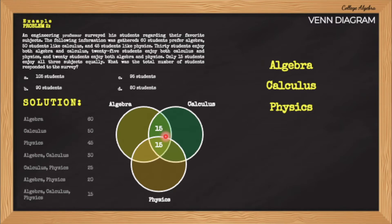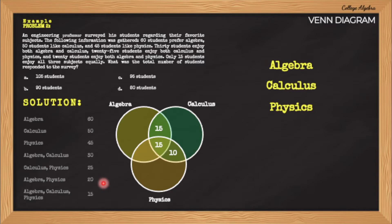Next is the intersection between calculus and physics. According to the problem, there are 25 students who enjoy these subjects. So if there are 25 students who enjoy both calculus and physics, and 15 of them is already written here, therefore the remaining 10 are those who enjoy only calculus and physics. And we have the intersection of algebra and physics. According to the problem, 20 students enjoy both of these subjects. So if 20 students enjoy algebra and physics and 15 of them is already written here, therefore 5 students are those who enjoy only algebra and physics.